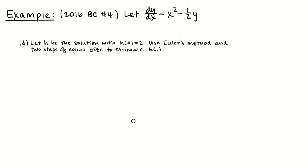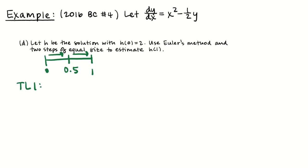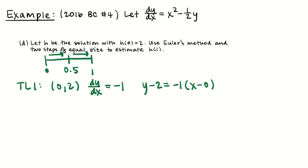The last part of this problem is the Euler's method part. We're using two steps of equal size from x equals 0 to approximate the value of function h at x equals 1. We start at x equals 0 with h(0) = 2. Two equal steps means first from 0 to 0.5, second from 0.5 to 1. My first tangent line: point (0, 2), slope is 0² minus 1/2 of 2 equals −1. So the equation is y minus 2 equals −1 times (x minus 0). Plugging in x equals 0.5: y is approximately 2 minus 1 times 0.5, so 2 minus 0.5 equals 1.5.